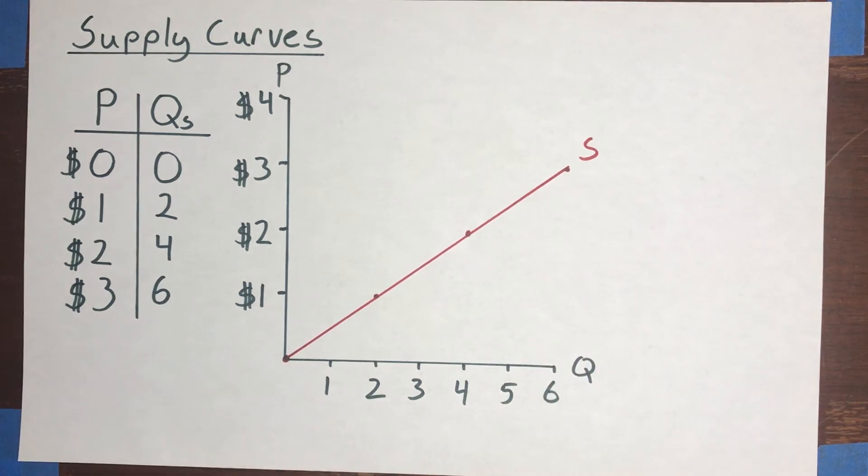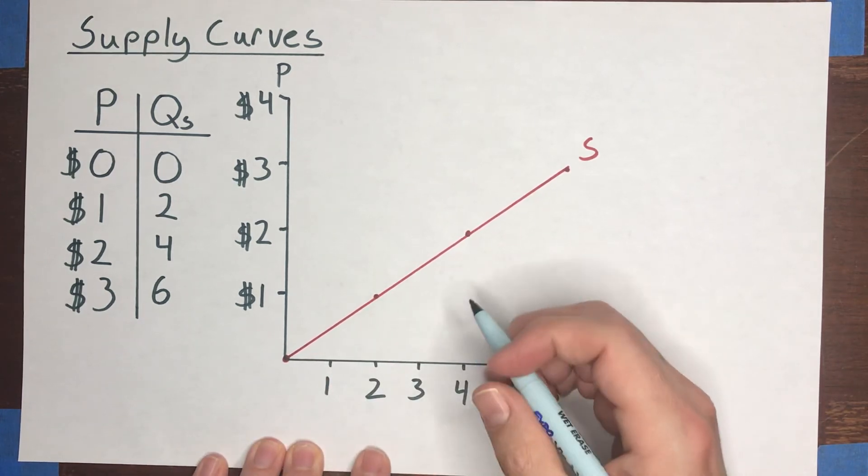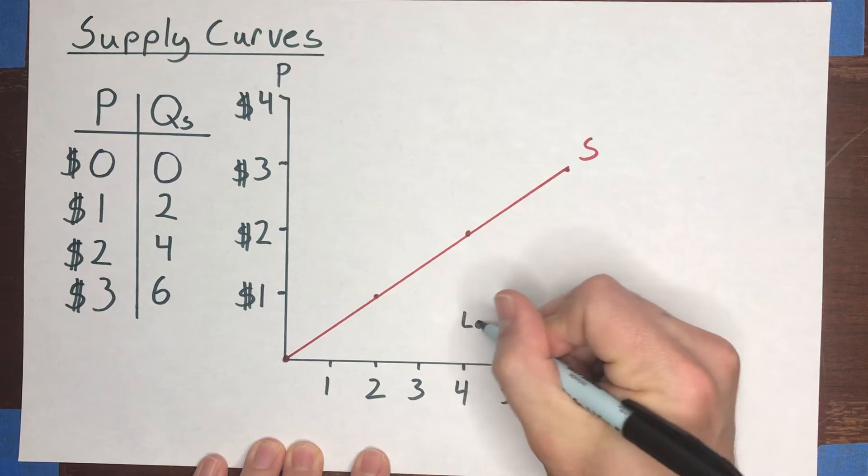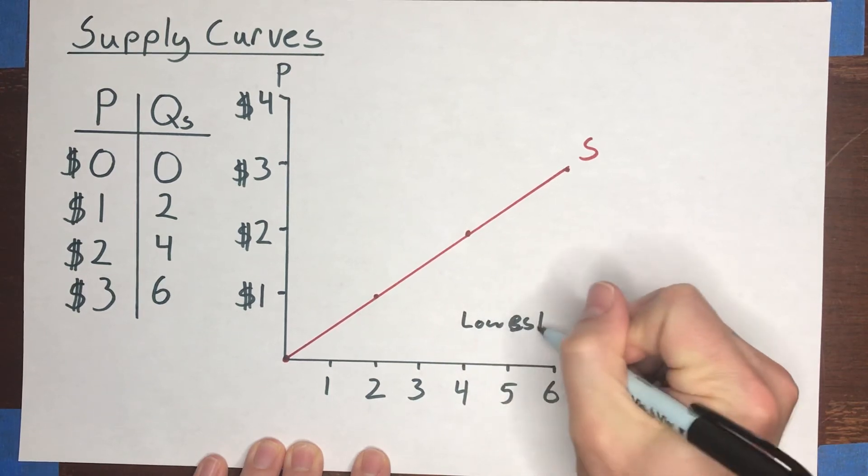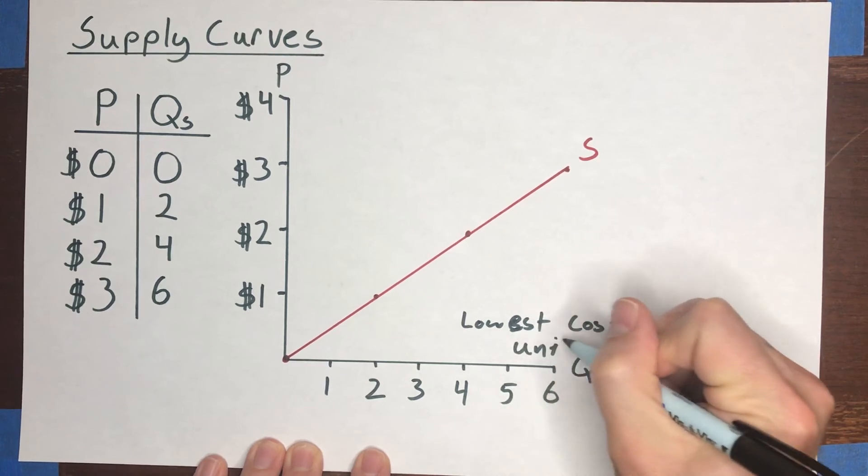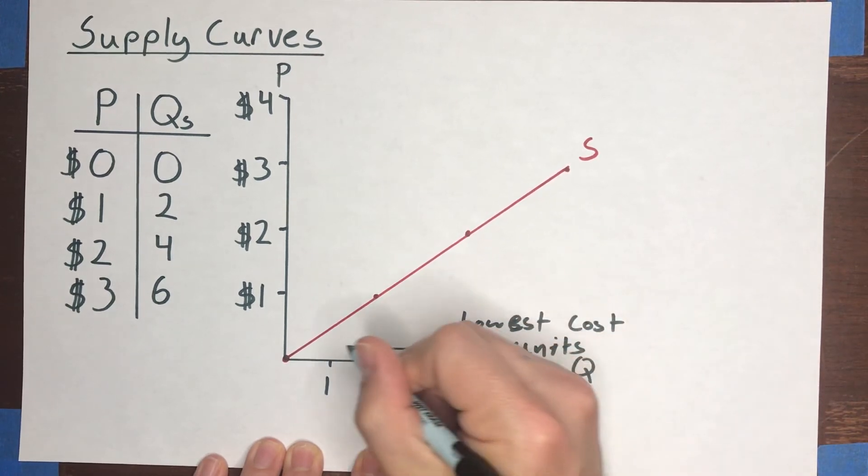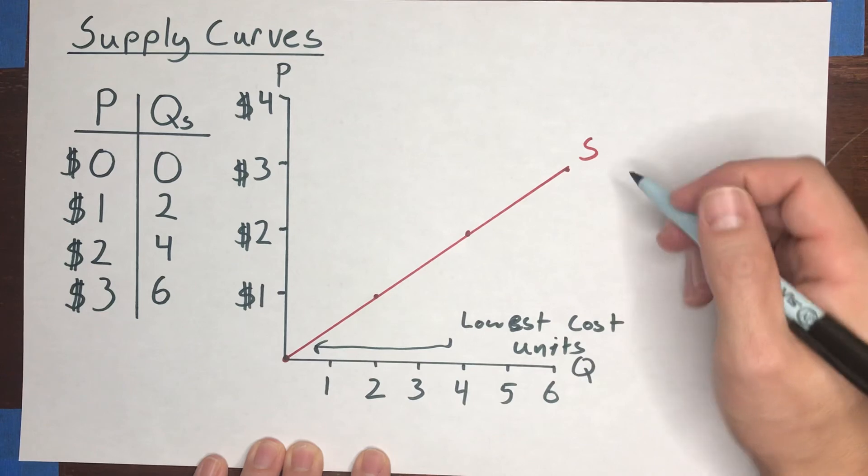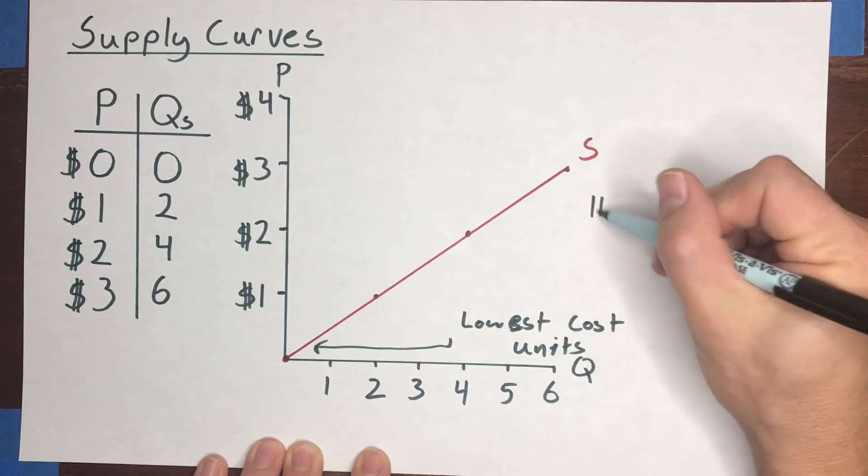Now, that would tell you that this lower region of the supply curve represents the lowest cost units. This upper region of the supply curve represents the highest cost units.